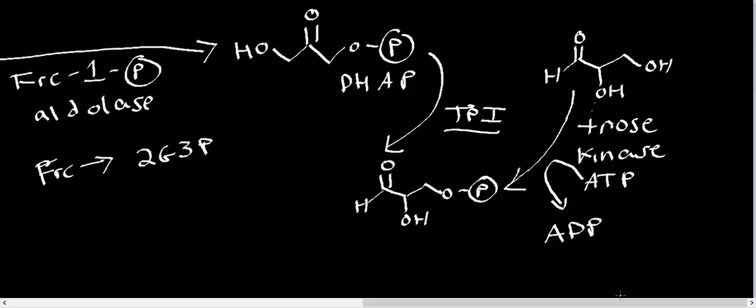Glycerone phosphate, also dihydroxyacetone phosphate, gets consumed by triose phosphate isomerase to form glyceraldehyde 3-phosphate. And glyceraldehyde gets consumed by triose kinase with the consumption of an ATP to form glyceraldehyde 3-phosphate. And so ultimately we get two of these, and these ultimately go into glycolysis.